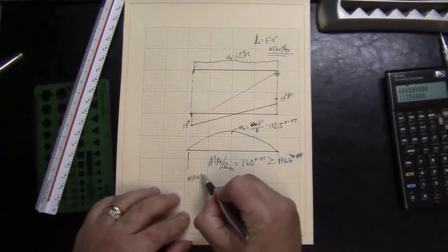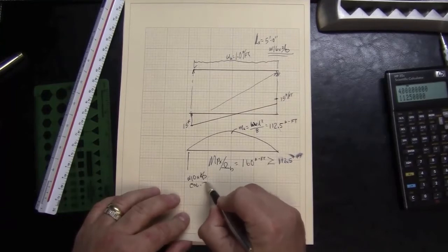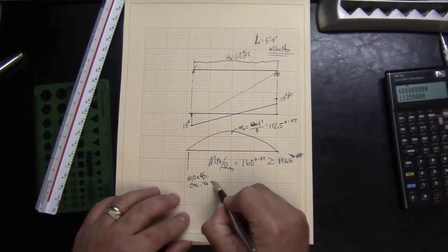So for right now, as a placeholder, I'm going to put a W10 by 45 column to be verified.